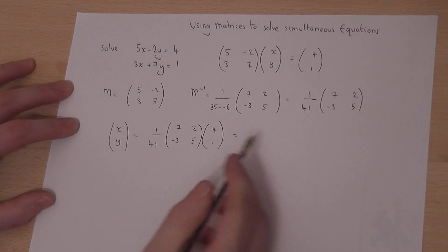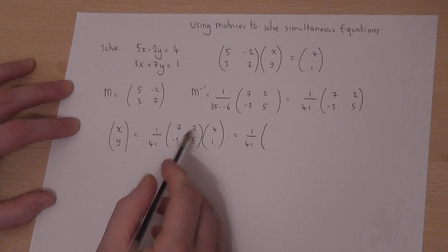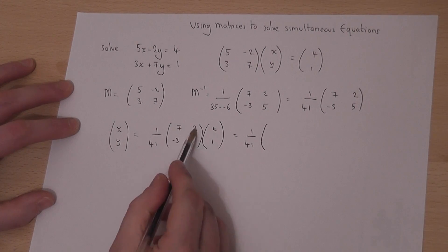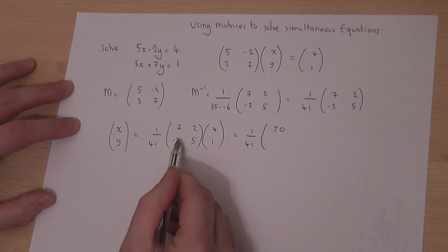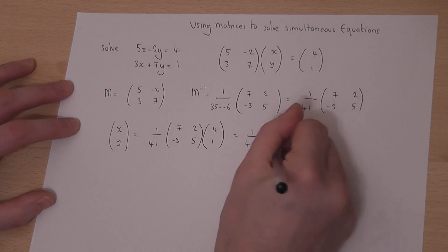We then work out what this becomes. Leaving the factor of 1 over 41, we have 7 times 4 is 28, plus 2 is 30. Minus 3 times 4 is minus 12, plus 5 is minus 7.